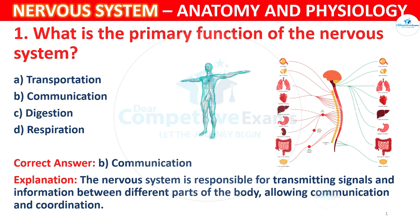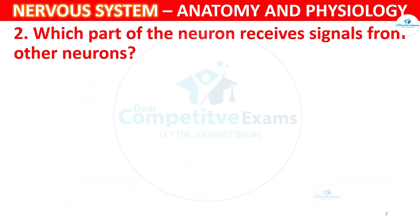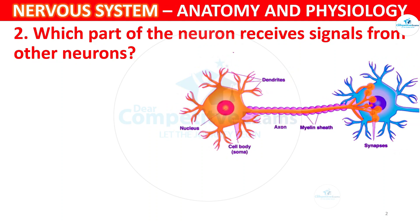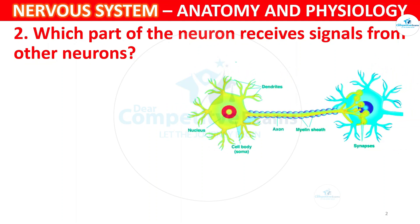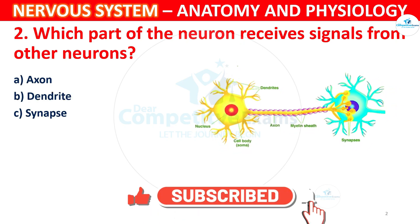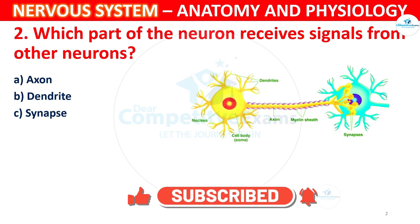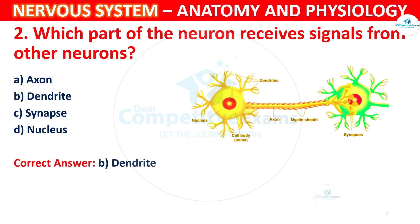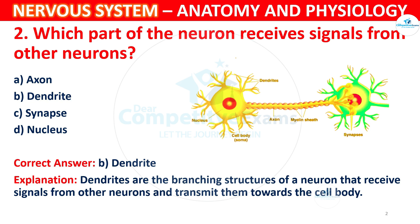Question 2: Which part of the neuron receives signals from other neurons? Options: A) Axon, B) Dendrite, C) Synapse, D) Nucleus. The correct answer is B, Dendrite. Dendrites are the branching structures of a neuron that receive signals from other neurons and transmit them towards the cell body.